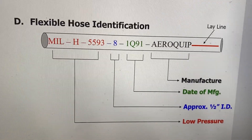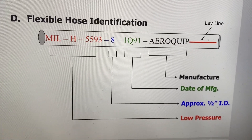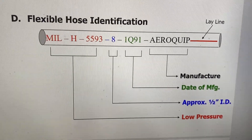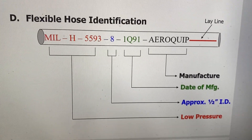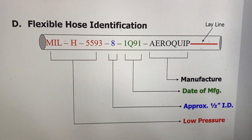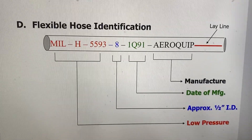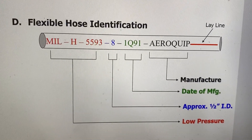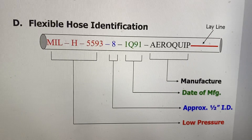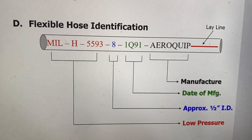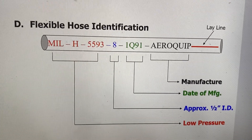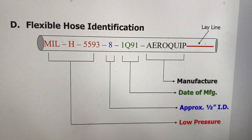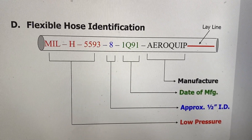Now let's talk about shelf life and service life — they're similar in how they're tracked but have completely different meanings. Shelf life means how long a component can basically be in storage or off the aircraft. Service life starts once the component is installed on the aircraft. We're going to concentrate on shelf life.